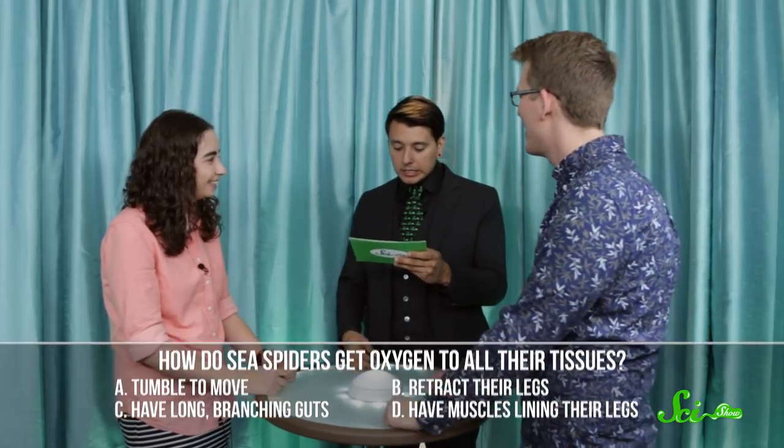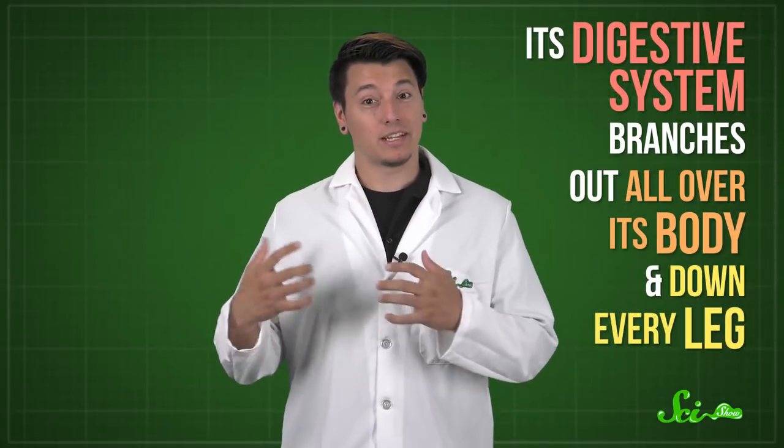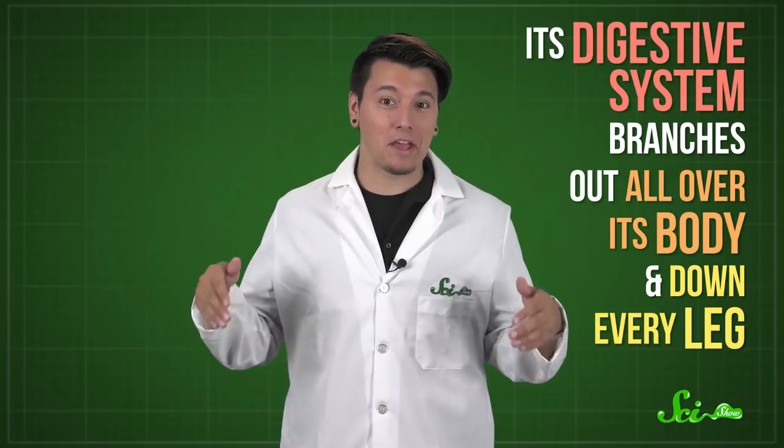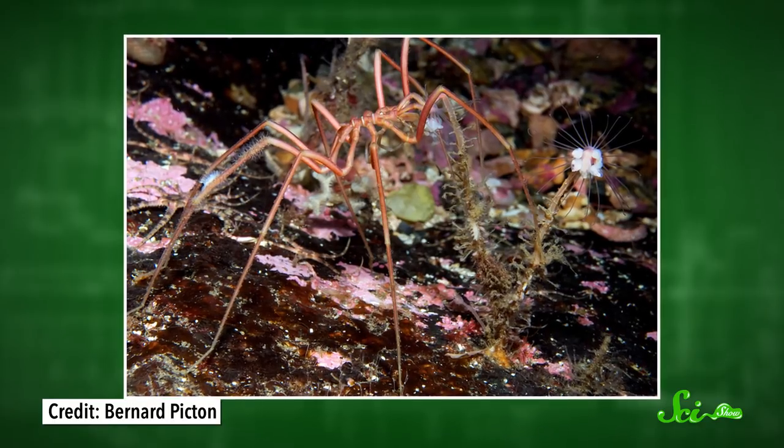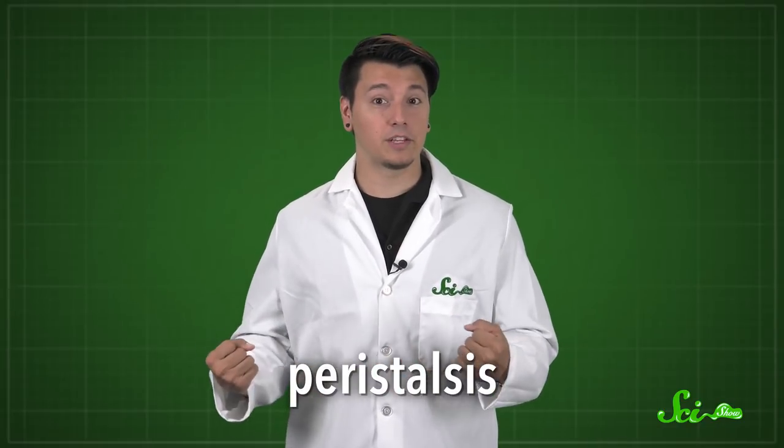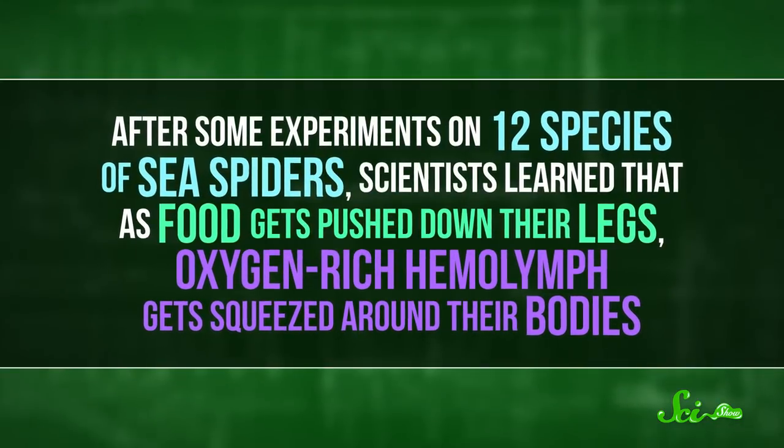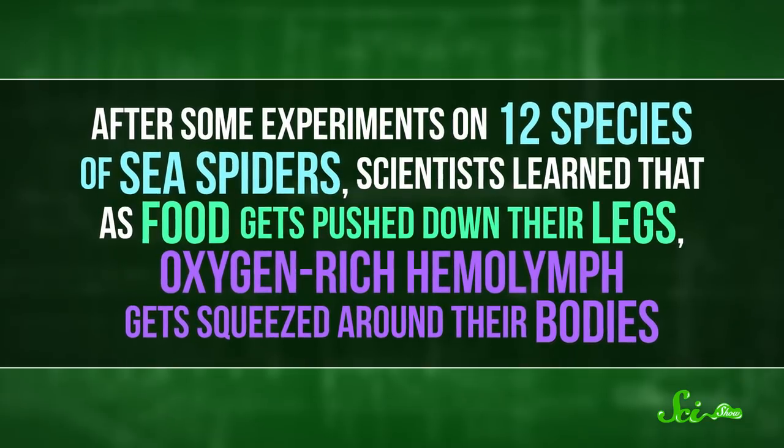The answer is C. Pump their guts. A sea spider, or pycnogonid, doesn't have enough space in its abdomen to hold all its guts. So its digestive system branches out all over its body and down every leg, kind of like how our blood vessels branch out everywhere. And instead of having gills, sea spiders take in oxygen by diffusion through their exoskeleton. Researchers noticed that the rhythmic peristalsis of a sea spider's gut, which is basically the muscles contracting and relaxing to move food along, is much stronger than they expected. Its heart, on the other hand, pumps pretty weakly. After some experiments on 12 species of sea spiders, scientists learned that as food gets pushed down their legs, oxygen-rich hemolymph gets squeezed around their bodies. So the way to their heart really is their stomach. Or at least that's what keeps the hemolymph pumping.